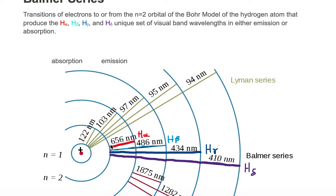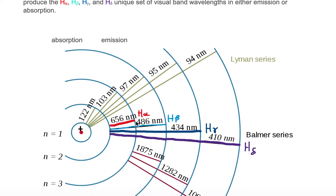If the electron were located in the n equal to 3 orbital and made a transition downward to the n equal to 2 orbital, then that electron would emit a colored photon. The color it would emit is red, with a wavelength of 656 nanometers, and we would call that H alpha.